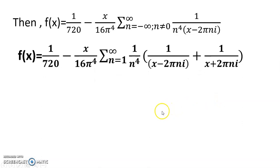And f(x) equals 1/720 minus x/(16π⁴), n equals 1 to infinity, 1/n^4 times 1/(x-2πni), and n equals minus infinity to infinity, then it is n equals 1 to infinity. So minus term will become plus, because minus n will become plus n. So it is x + 2πni.